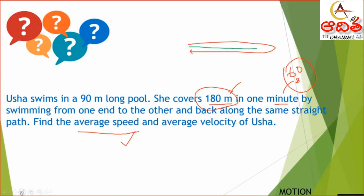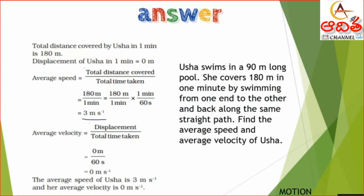For average velocity, we use displacement divided by time. Since Usha's initial and final positions are the same, the displacement is 0 meters. So 0 divided by 60 seconds gives an average velocity of 0 meter per second.